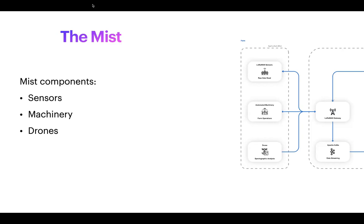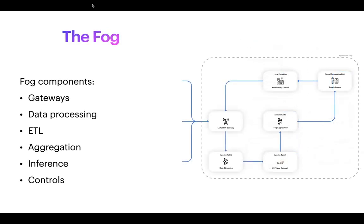That spectrographic approach is what we're now using in large forestry solutions in Canada and the Nordics — scanning forests to figure out how healthy they are. The 'fog' layer consists of components that aggregate data across different regions. A single farm could span quite a large landmass with multiple mist nodes, and the fog would aggregate that data so we didn't need to send everything to the cloud. We had control management systems, so you could manage the system via SMS messages, ETL for data transformations locally, and machine learning inference locally to advise producers in the field.